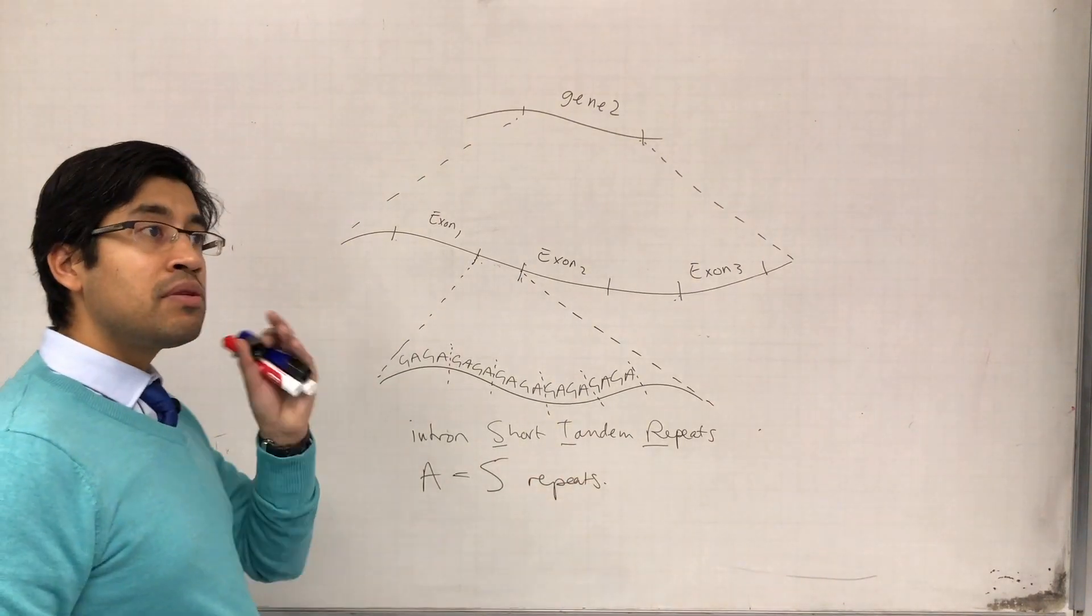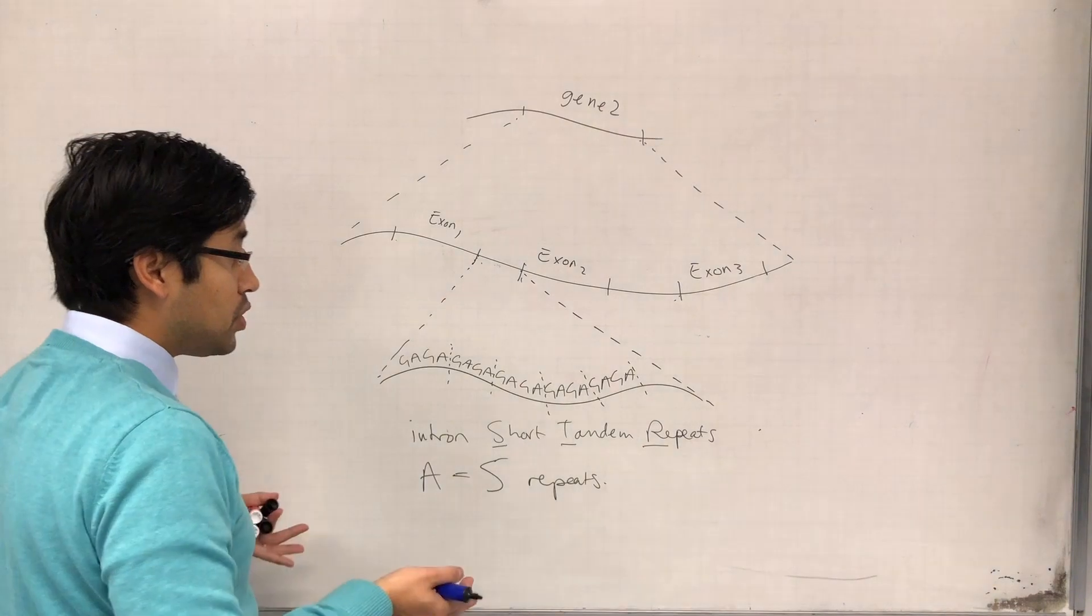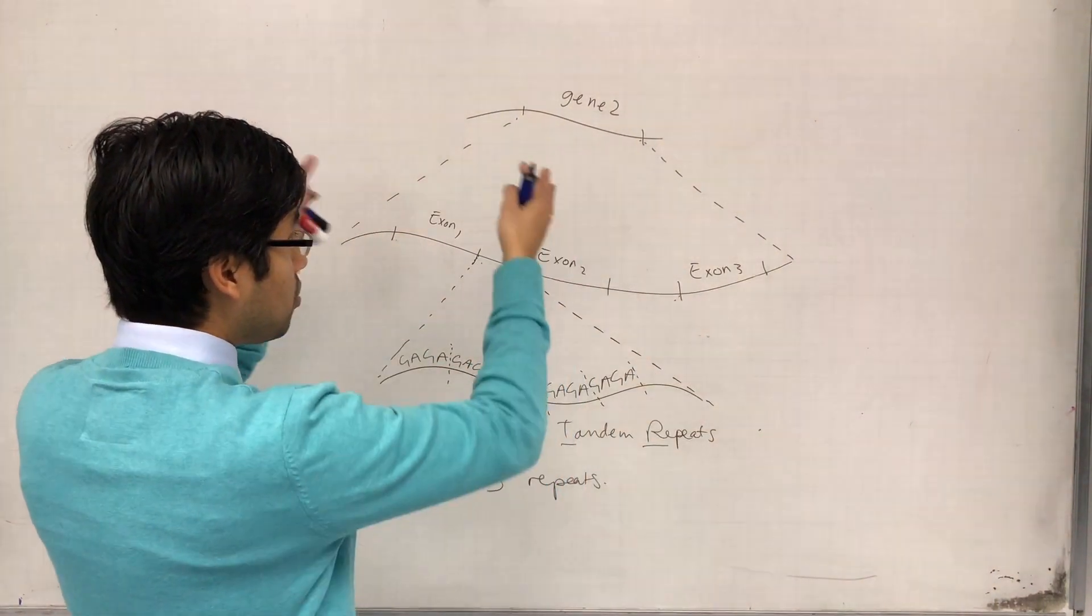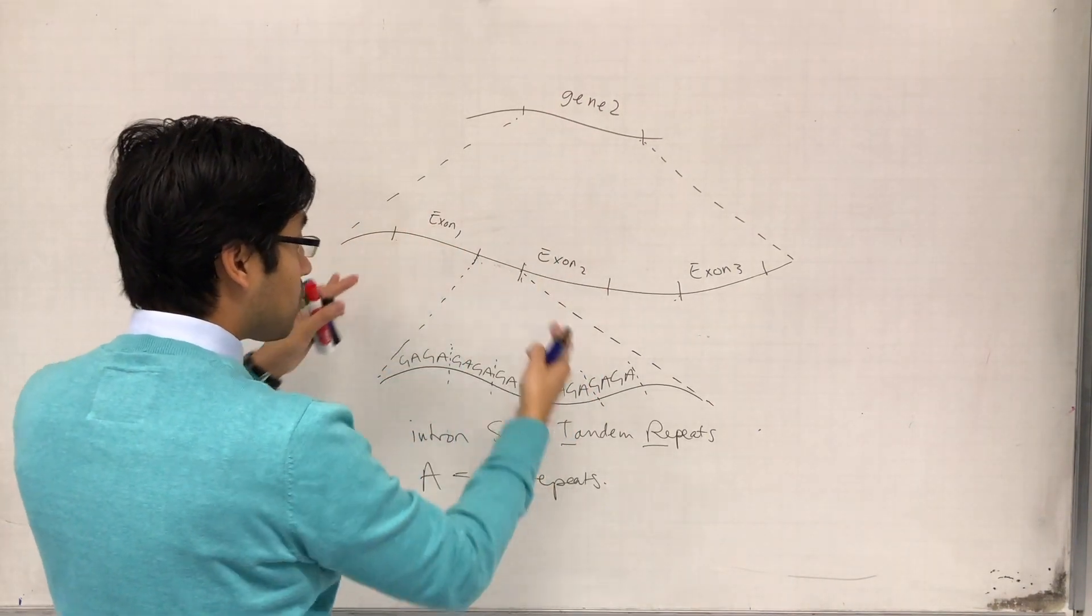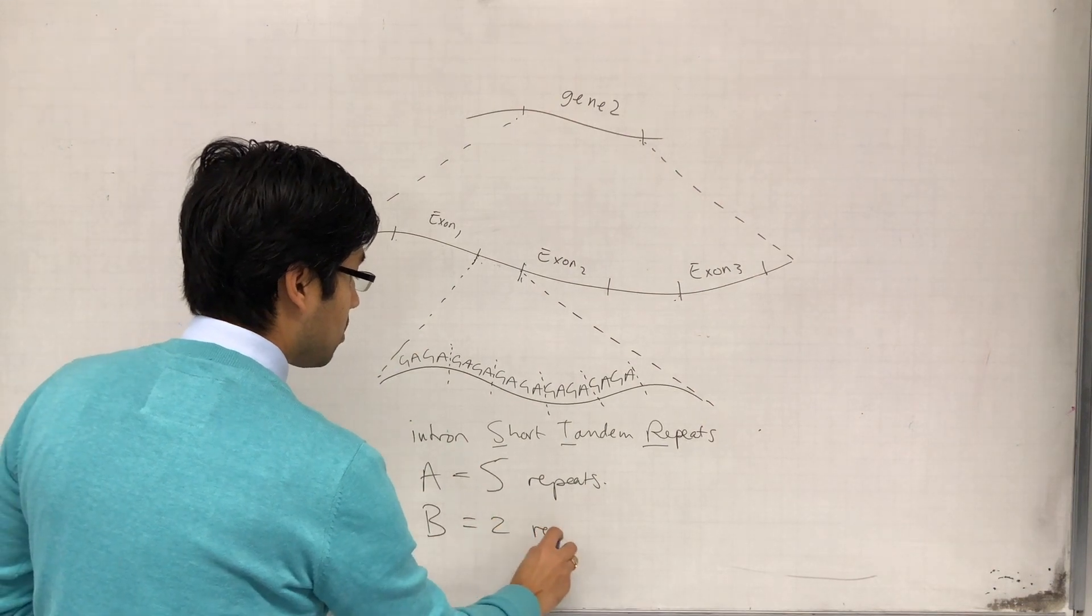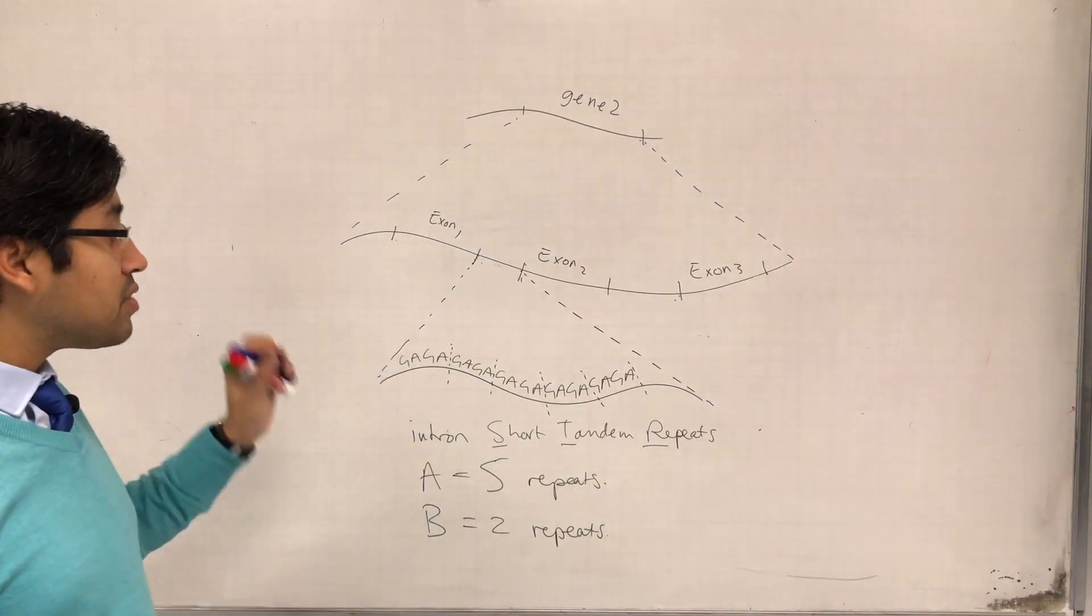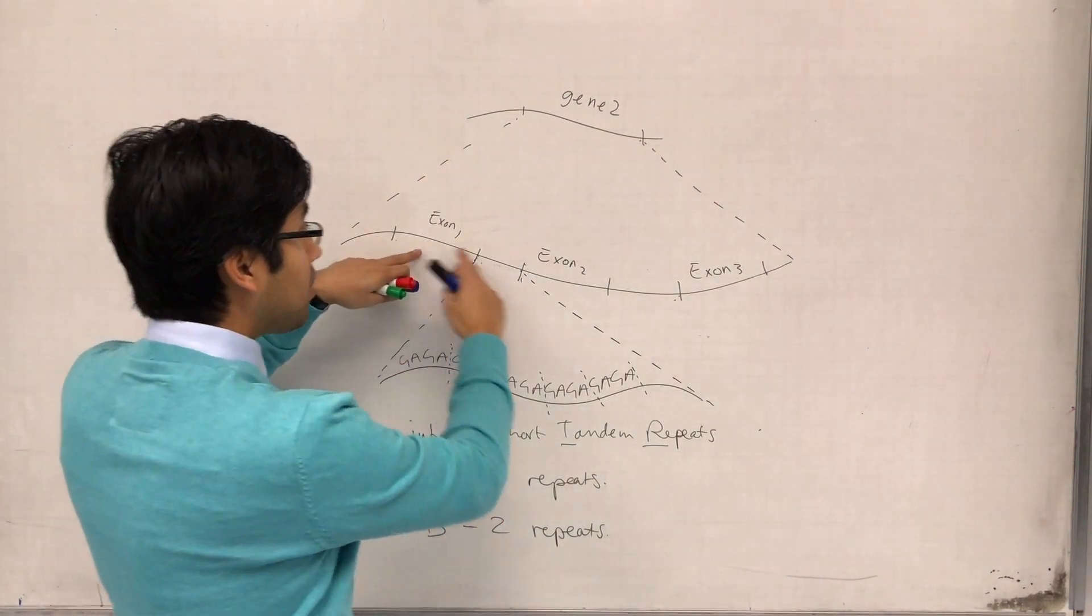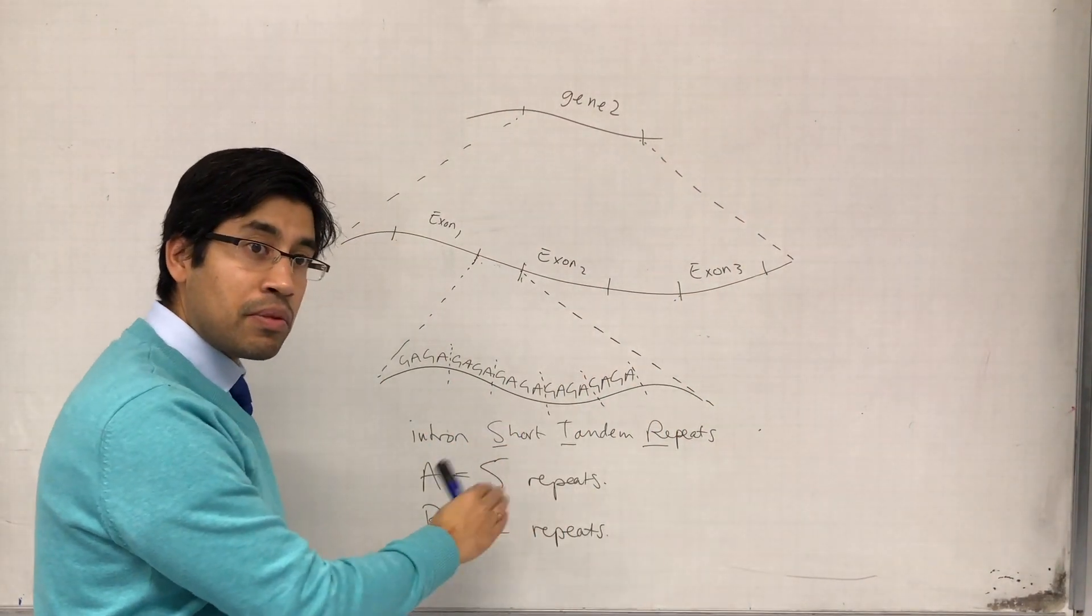When I look at person two in this particular gene, in this particular intron, person B might have two repeats. It doesn't affect the function of the gene. They might even have almost identical copies of the exon sequences, but they're likely to have differences in these numbers of repeats.